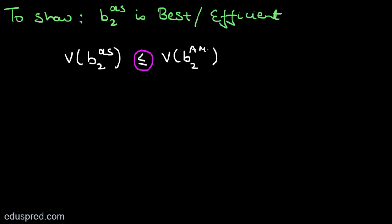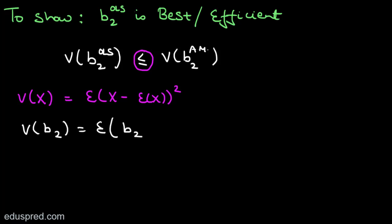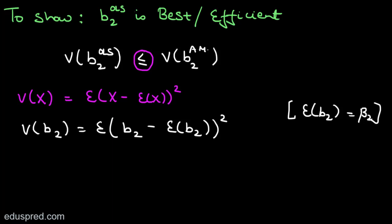To calculate the variance of a random variable x, one formula we have is: Var(x) = E[(x - E[x])²]. Using this formula for B2: Var(B2) = E[(B2 - E[B2])²]. Since we already showed B2 is unbiased, we know E[B2] = beta2. So we can write: Var(B2) = E[(B2 - beta2)²].